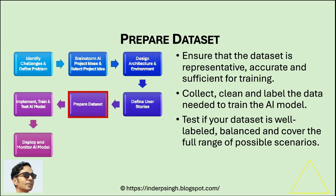Phase 5: Prepare the dataset. The success of any project based on AI, ML, and software testing depends on both the quality and quantity of the data. Design a dataset that is representative, accurate, and sufficient for training. For the test case prioritization project, this might include existing test cases and bug reports. You can also use a free mock data generator tool available on the software testing space blog.